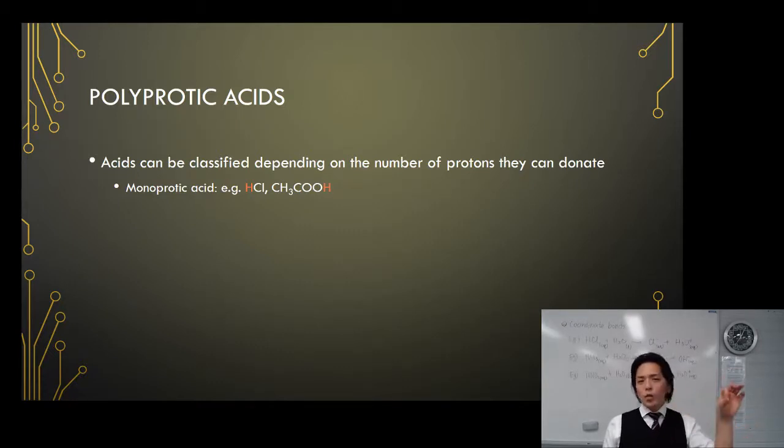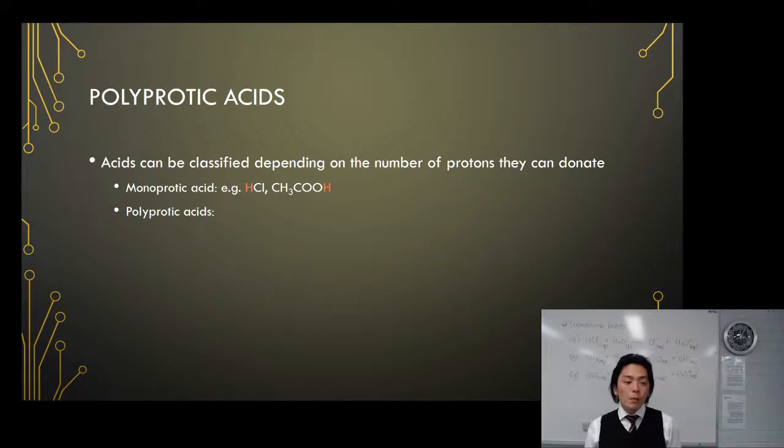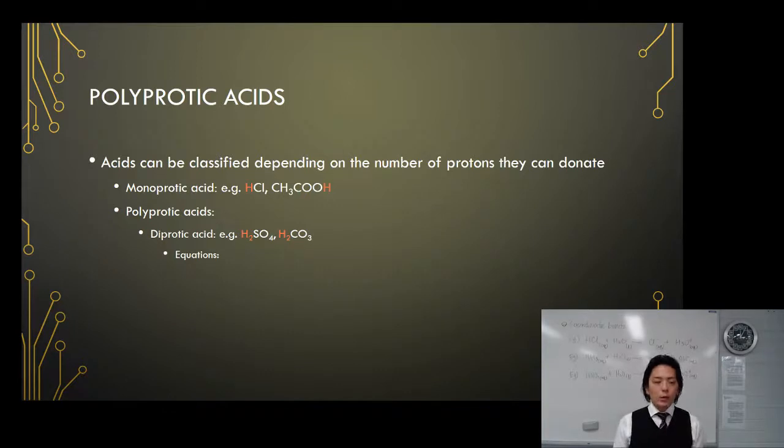Whereas polyprotic acid has more than one proton that can be donated. Diprotic acid, as the name suggests, has two protons. H2SO4 or H2CO3, sulfuric acid or carbonic acid respectively, can donate two protons. Triprotic acid, for example H3PO4 which is phosphoric acid, or citric acid which has the formula C6H8O7.